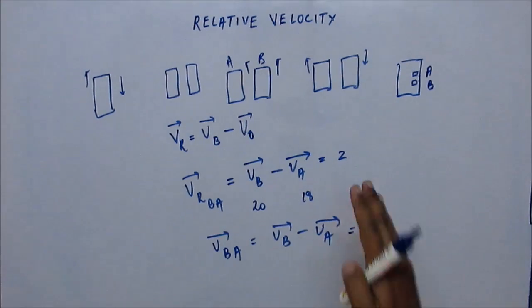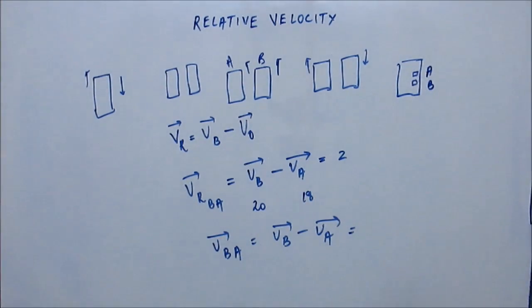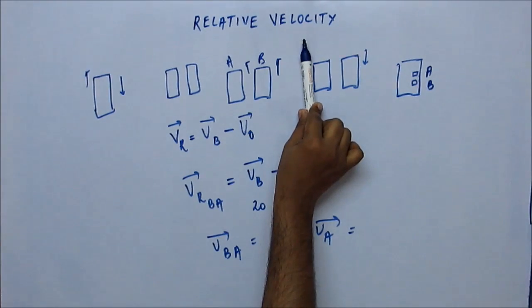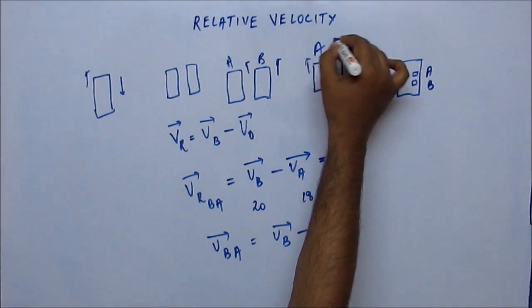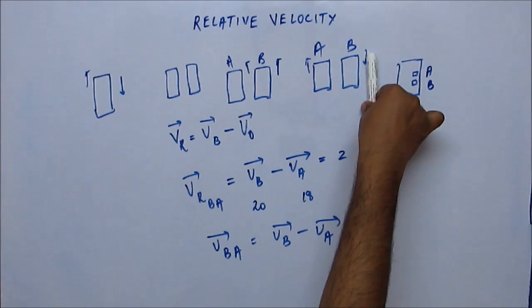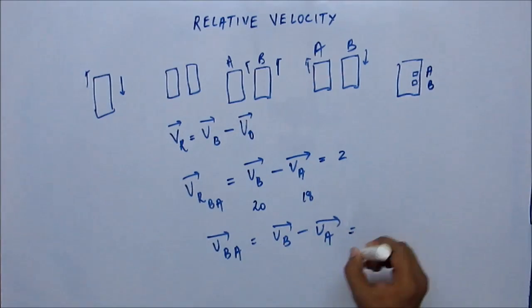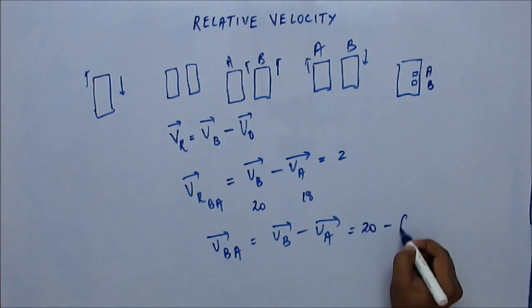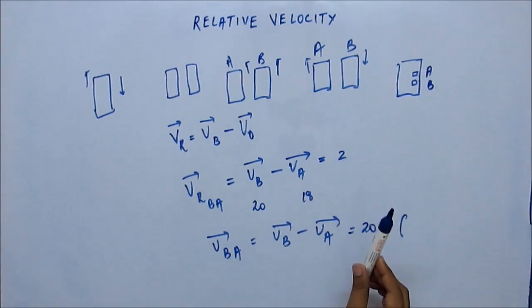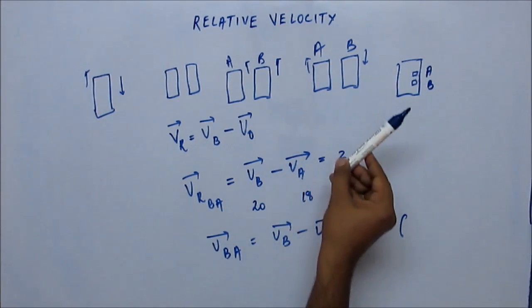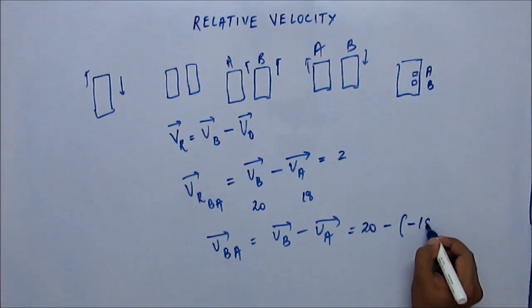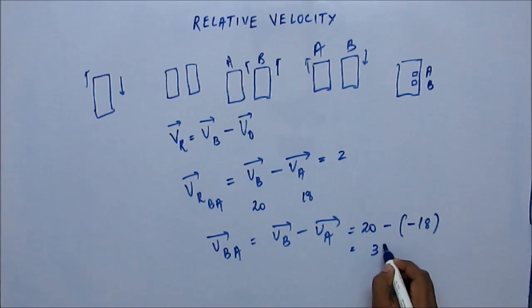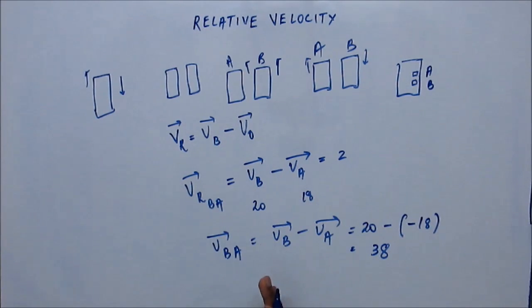Now suppose the two trains are moving in opposite directions. Velocity of B with respect to A equals velocity of B minus velocity of A. These are vector quantities, so we must take the sign into account. If we consider one direction as positive, the other direction is negative by default. Suppose B is moving at +20 km/h and A is moving in the opposite direction, so its velocity is −18 km/h. Then velocity of B with respect to A equals 20 − (−18) = 38 km/h. That's why the train moving in the opposite direction passes by very rapidly compared to a train moving in the same direction.